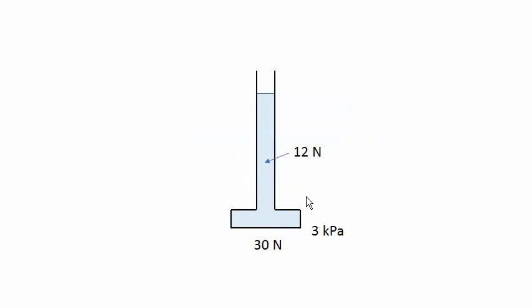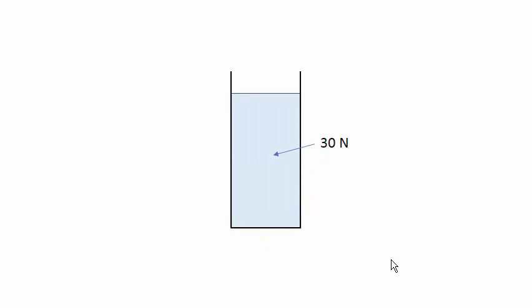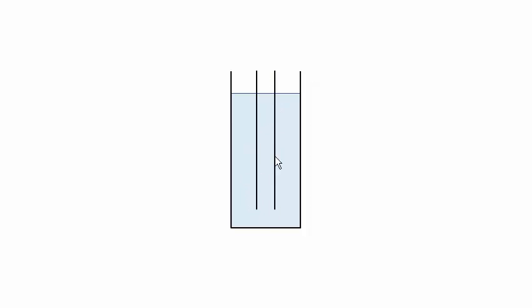Now what about this container? It has less than 30 newtons of water. How can, say, 12 newtons of water exert a downward force of 30 newtons on the bottom of this container? To find out, let's look at the original container first — with parallel sides and 30 newtons of water. Imagine we put two pieces of cardboard in here like this.